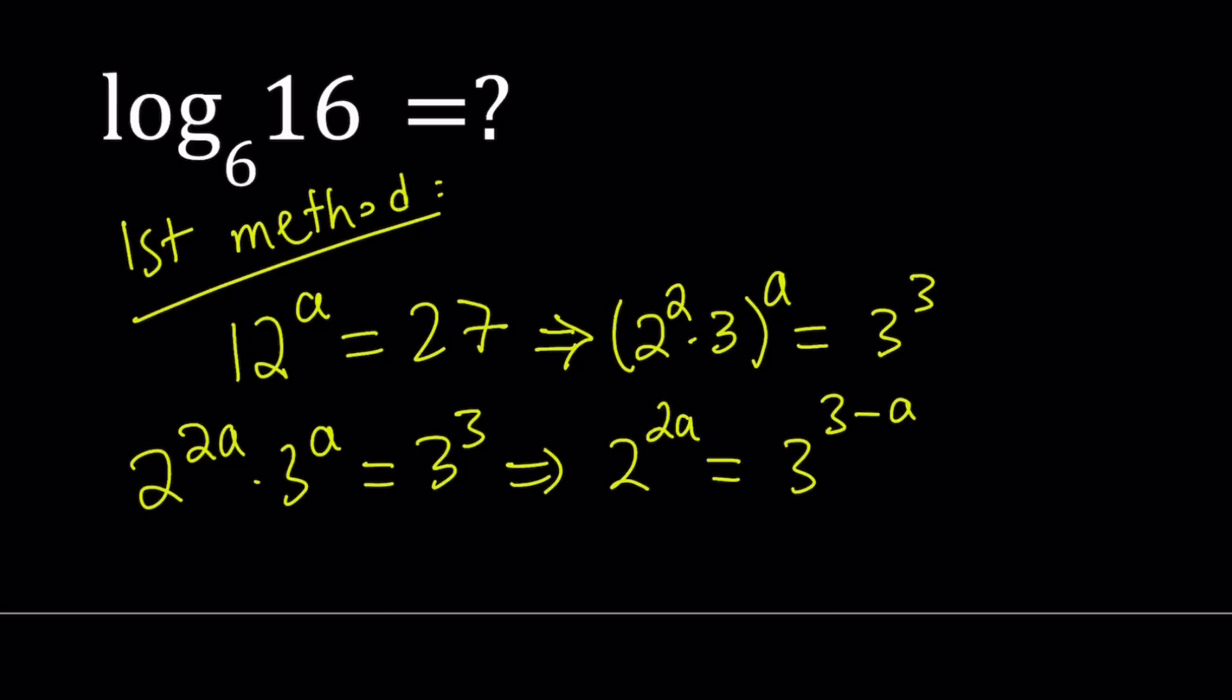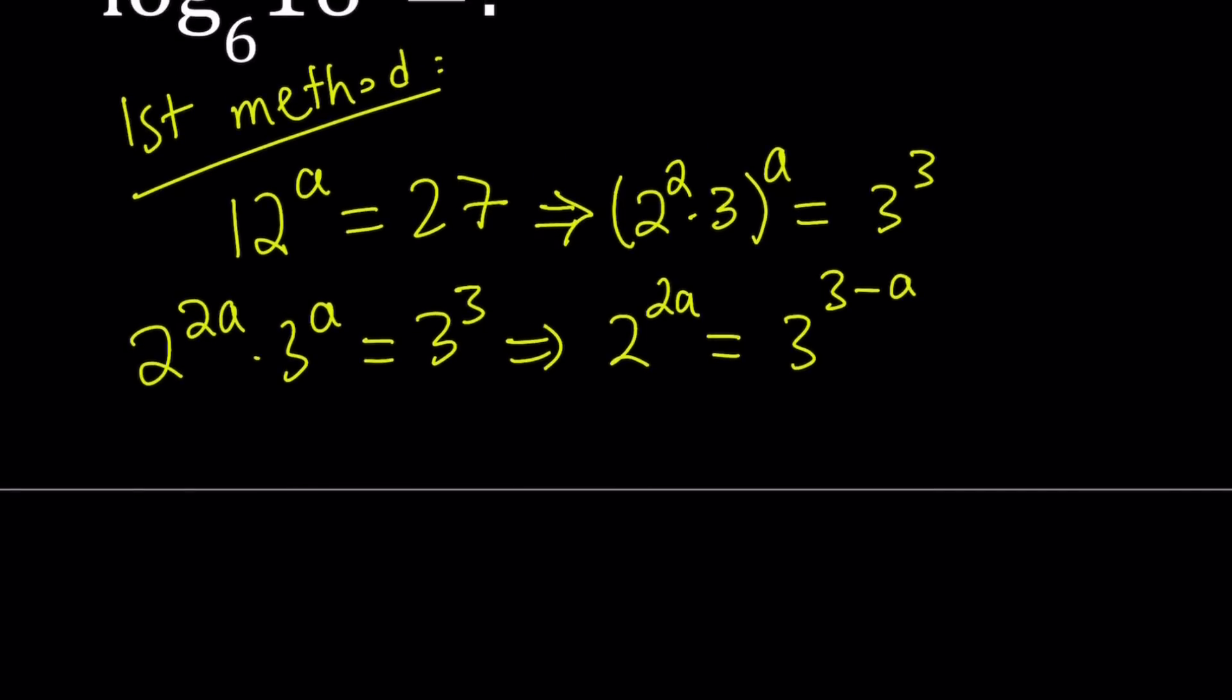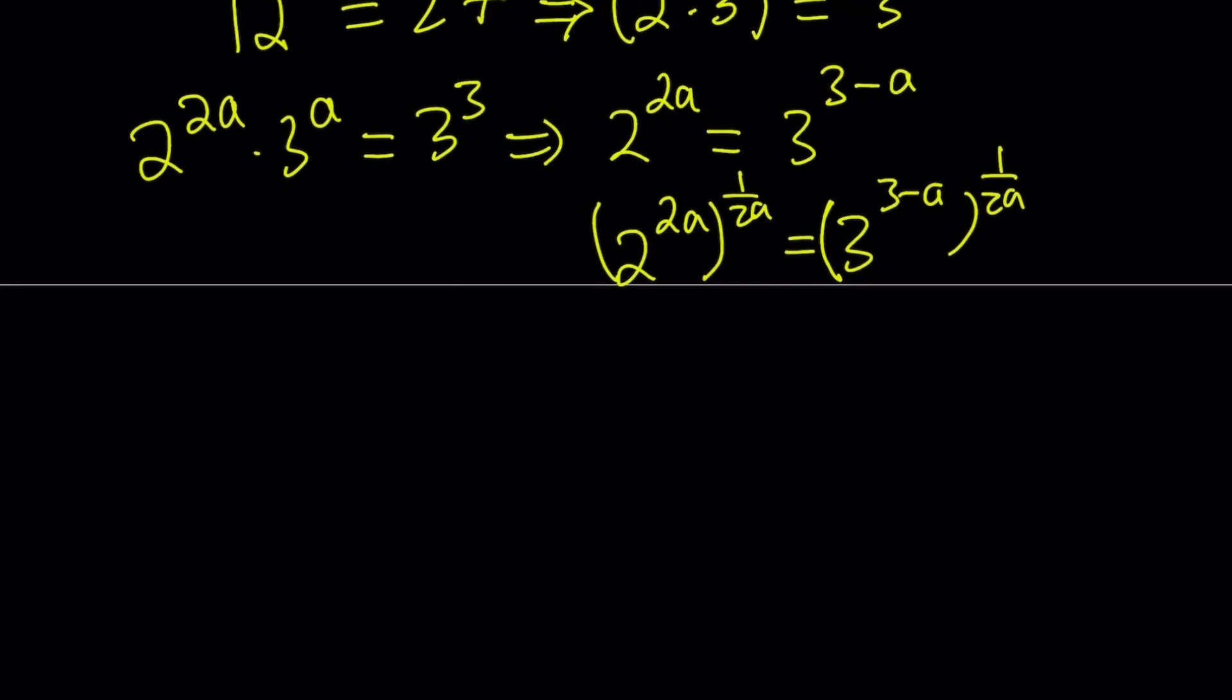Great. So we've got the 2s and 3s on different sides. Now let's go ahead and isolate the 2 here. I want to have the 2 by itself, so I would basically raise both sides to the power 1 over 2A. I think it's clear that A does not equal 0. So here on the right-hand side, we're going to have 3 to the power 3 minus A raised to the power 1 over 2A. The 2A cancels out, and here we get 2 equals 3 to the power 3 minus A divided by 2A. So this is going to be critical. We're going to use this later on.